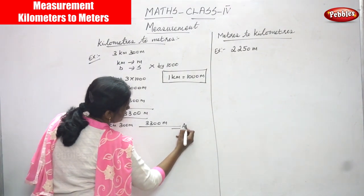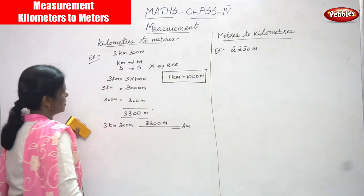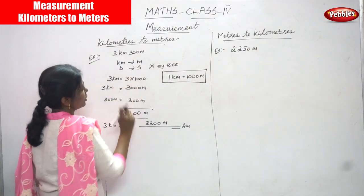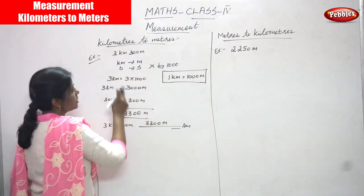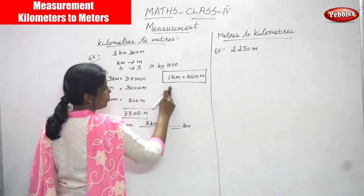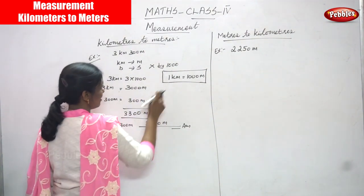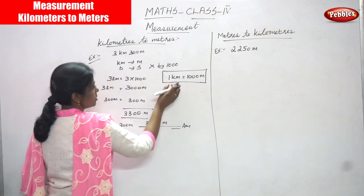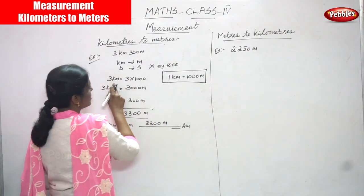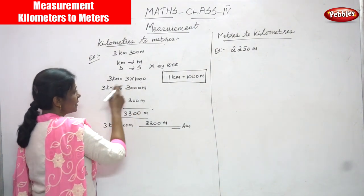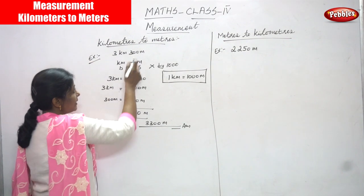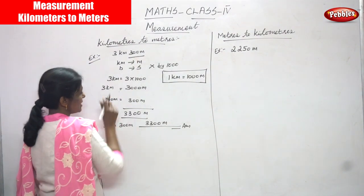The answer is 3300 meters — this is the right answer. So: 3 kilometers and 300 meters, convert into meters. Bigger unit to smaller unit, so multiply by 1000 because 1 kilometer equals 1000 meters. This is the formula — you have to write it for each and every sum. So 3 kilometers equals 3 into 1000, which means 3000 meters.